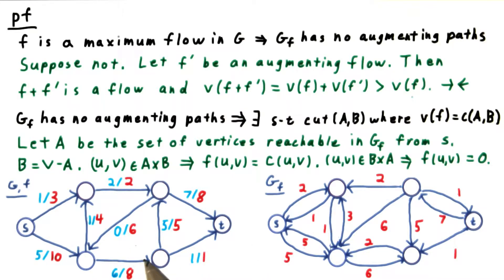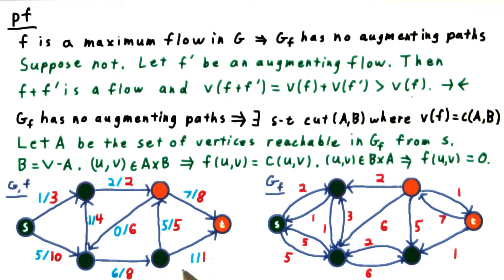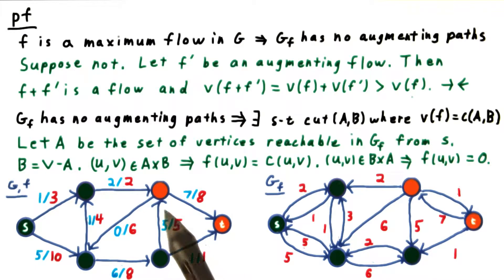Here we have a flow on the left and the corresponding residual graph on the right. Note that there is no path from S to T in the residual graph. Let's mark the vertices we can reach from S in green and the other ones in orange. Now it's easy to see that all the edges from the green to the orange vertices are saturated and the edges from the orange to the green are empty — just like the theorem claims.